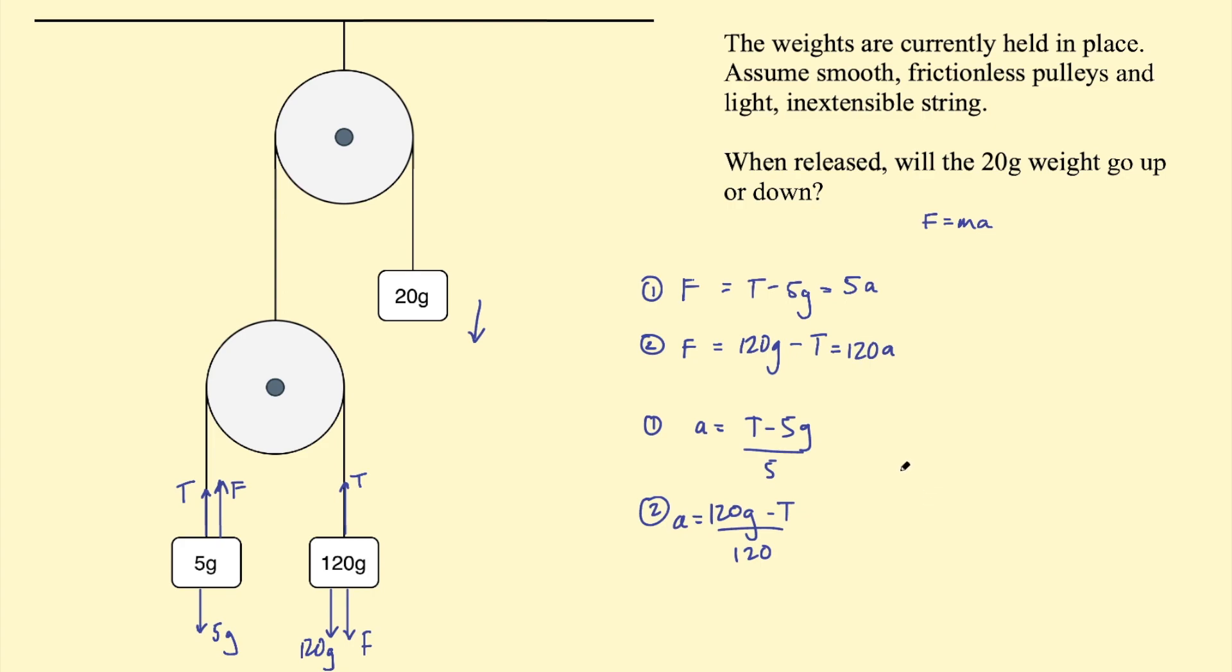And then setting these two equal to each other, we have T take 5G on 5 equal to 120 G take T on 120. Simplifying, we could multiply this side by 120, then we get 120 divided by 5, which is 24. So this would be 24 T subtract 120 G equals 120 G minus T. And then we get 25 T equal to 240 G.